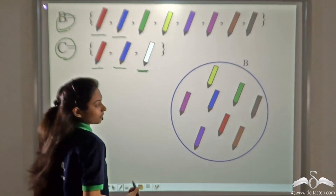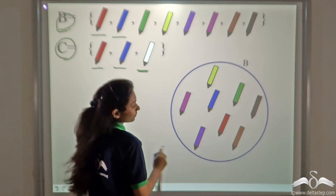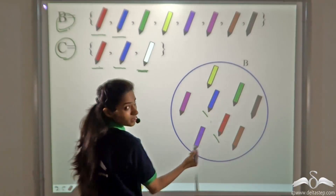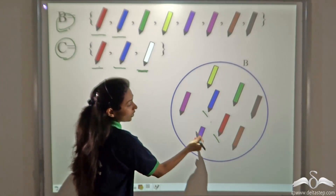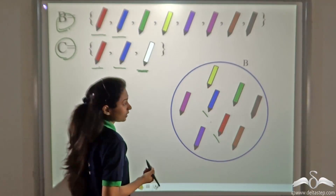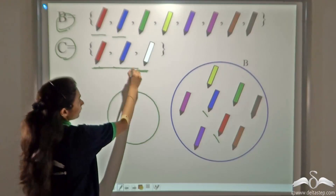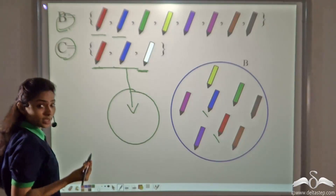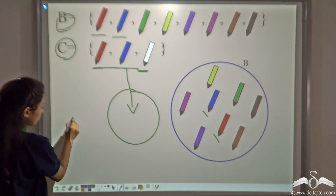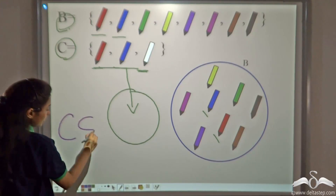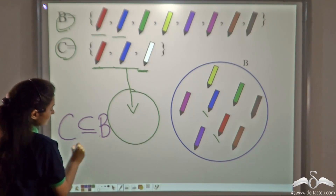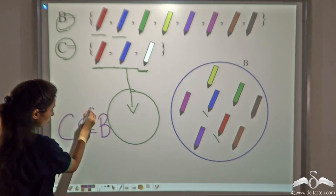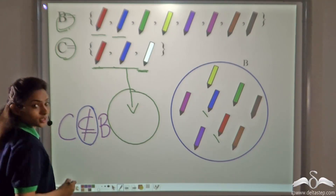Even in this Venn diagram, you can see red and blue pens, but you cannot see a white pen — a white pen is not present in set B. So we cannot draw a Venn diagram inside B to denote C; we have to make it outside with those pens. So we say that C is not a subset of B. This is denoted by placing a strike through the subset symbol — this symbol shows 'not a subset.'